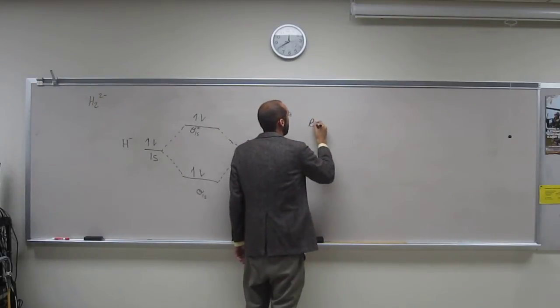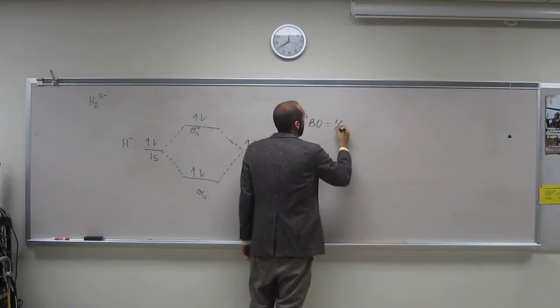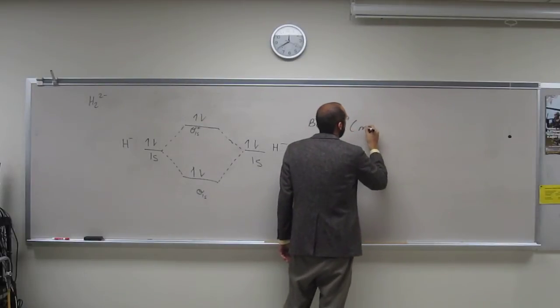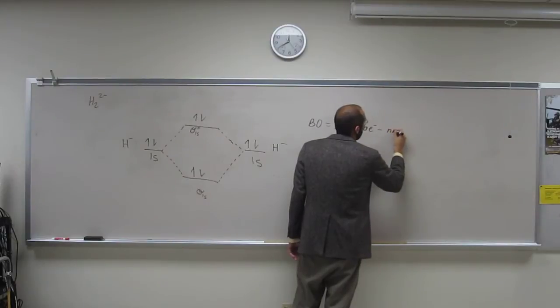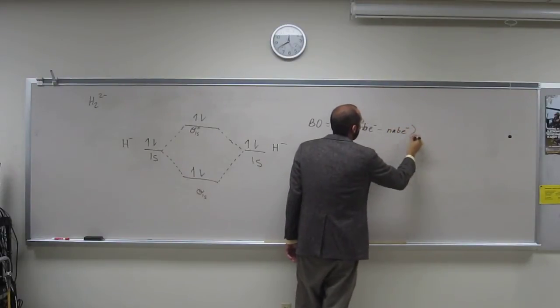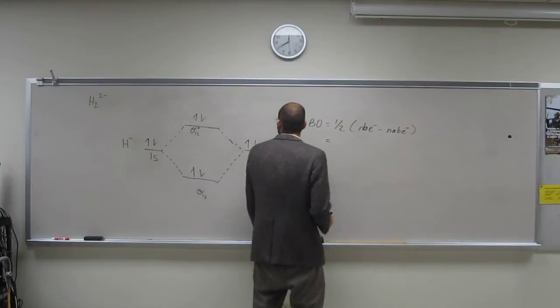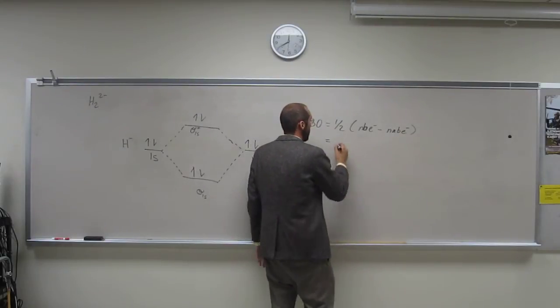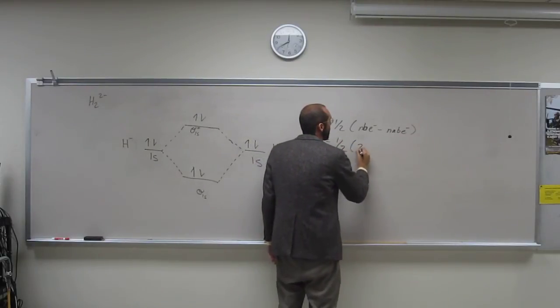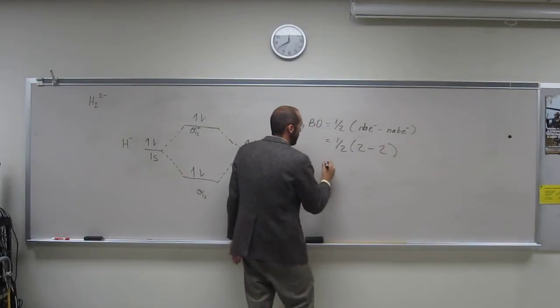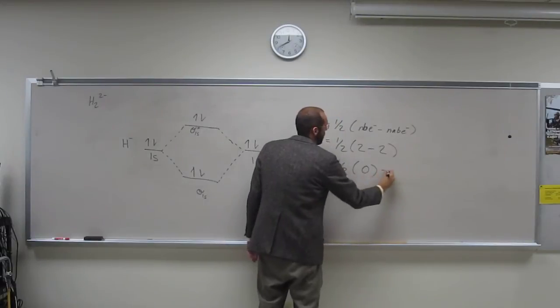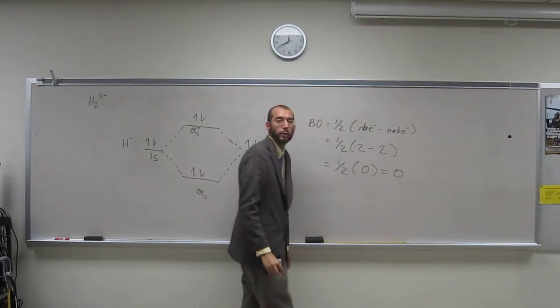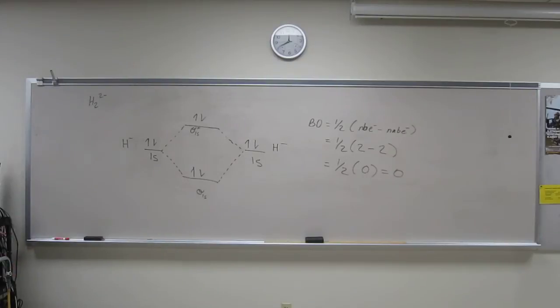So the bond order, one-half times the number of bonding electrons minus the number of antibonding electrons. Okay, so the number of bonding electrons is 2, antibonding electrons is 2, one-half, 2 minus 2 is 0. So the bond order equals 0. So this does not exist, right? Is everybody okay with that?